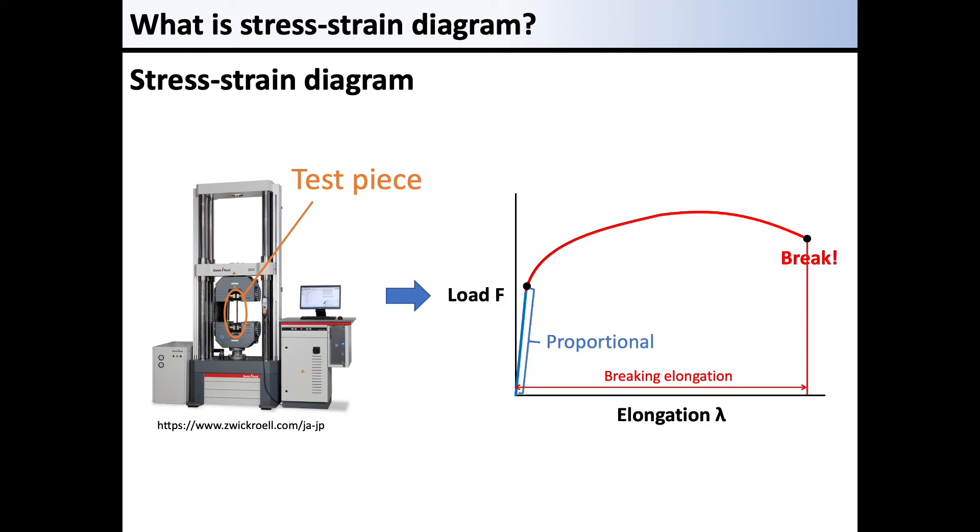When arguing about material properties, the relationship between the load and elongation is not very useful. For example, a piece of material that has larger thickness or width breaks at greater loads. The elongation of a longer piece of a material is longer than that of a shorter one at the same load.